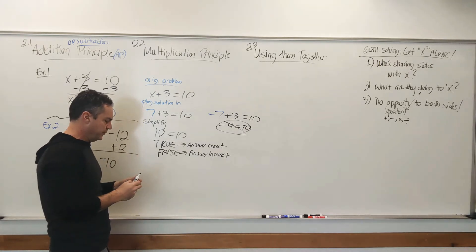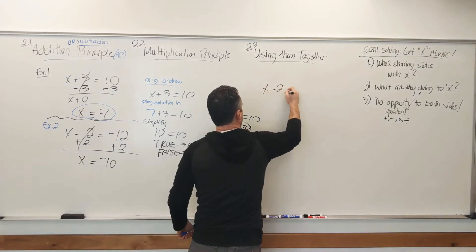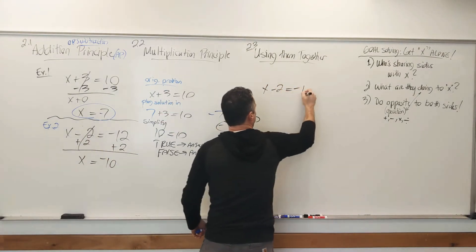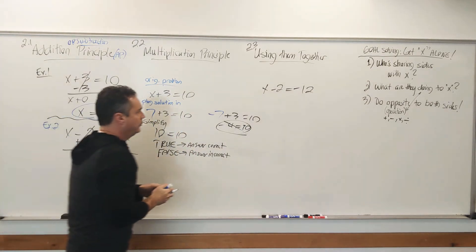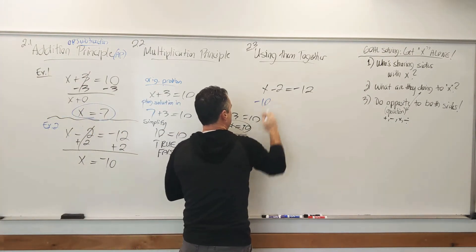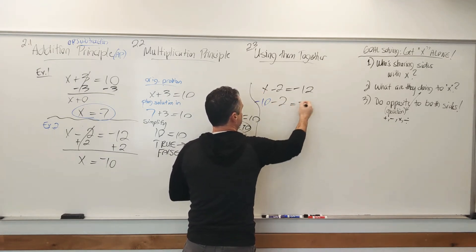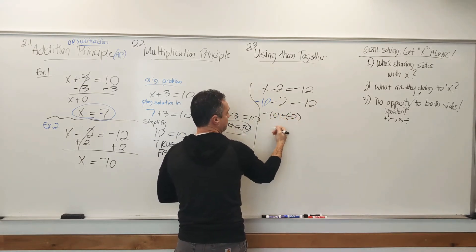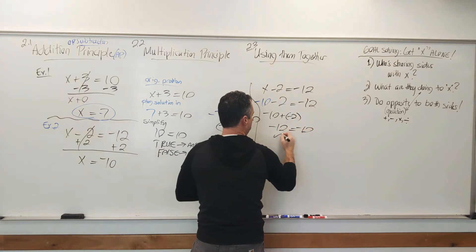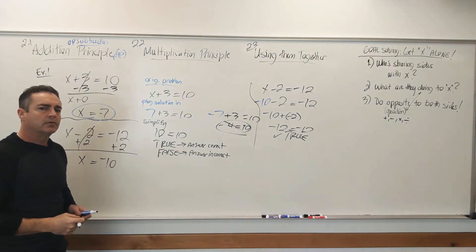For example number 2, x minus 2 equals negative 12, we take the solution negative 10 and plug it in. So we have negative 10 minus 2 equals negative 12. Negative 10 minus 2 is the same as negative 10 plus negative 2. Same sign, 10 and 2 make 12, all negatives. So negative 12 equals negative 12. Check — that is a true statement, so negative 10 was the correct answer.